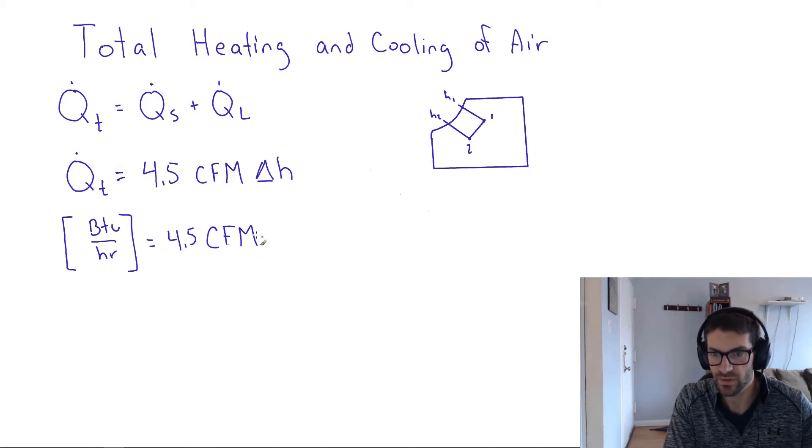Times the CFM—so the volume flow rate has to be in CFM. That's required. And the enthalpy should be in BTU per pound, which is how it's offered on this axis along the psychrometric chart.